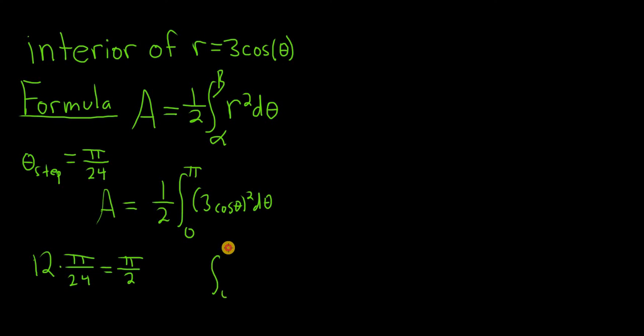So if I go from 0 to pi over 2 and I put a 1 half here, I get half of the area. So I can just take this and multiply it by 2. Beautiful stuff.